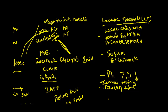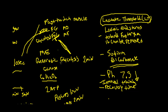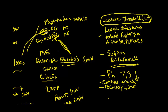Lactate threshold is extremely important to improve. You can improve it by doing interval training or muscle endurance training, which causes your body to produce and store more sodium bicarbonate over time. The performance improvements from anaerobic glycolysis are quite different from the performance changes resulting from the ATP-CP system, and we'll talk about that in a future video.